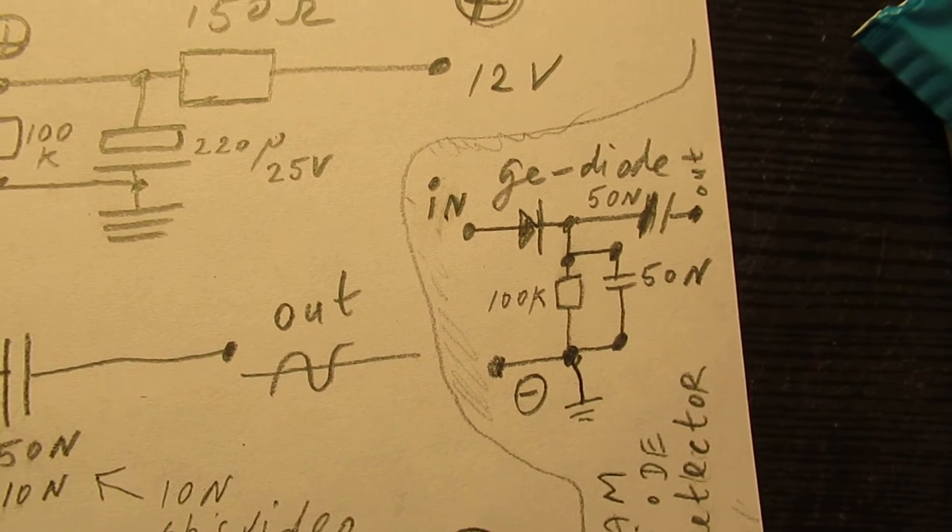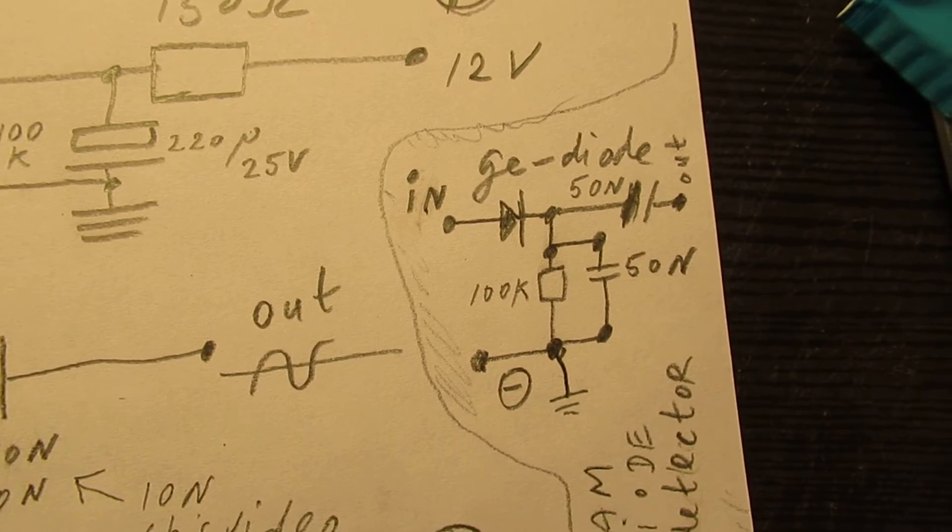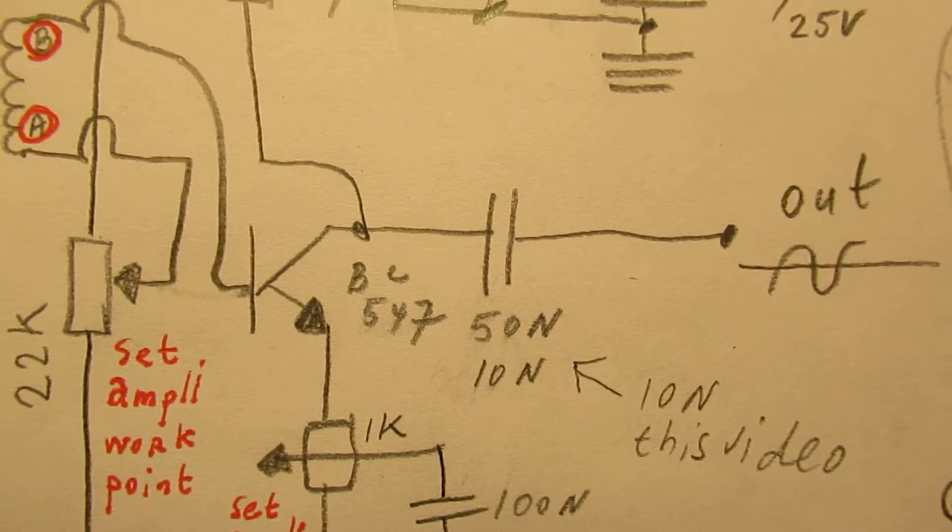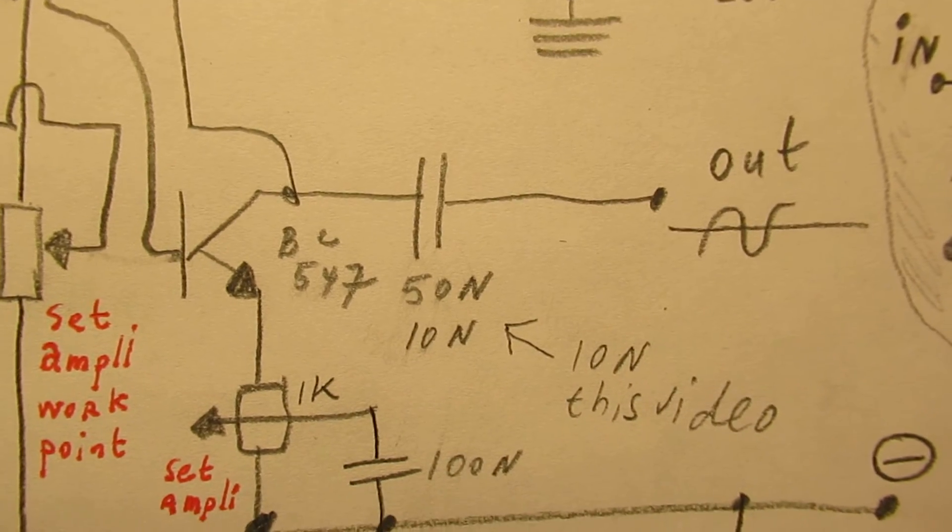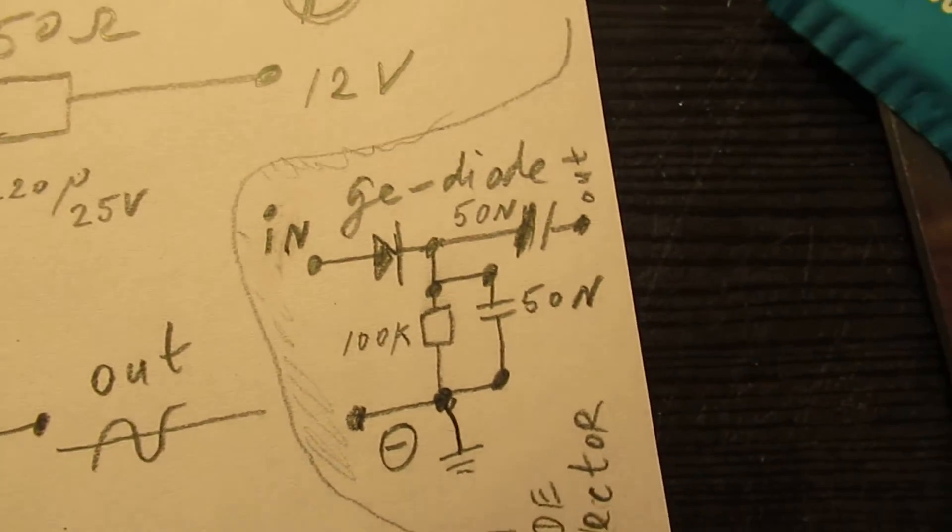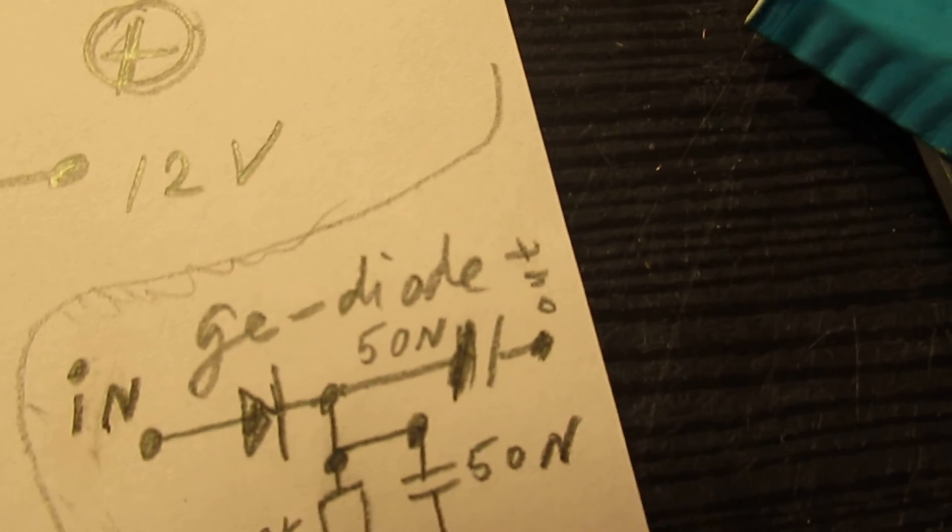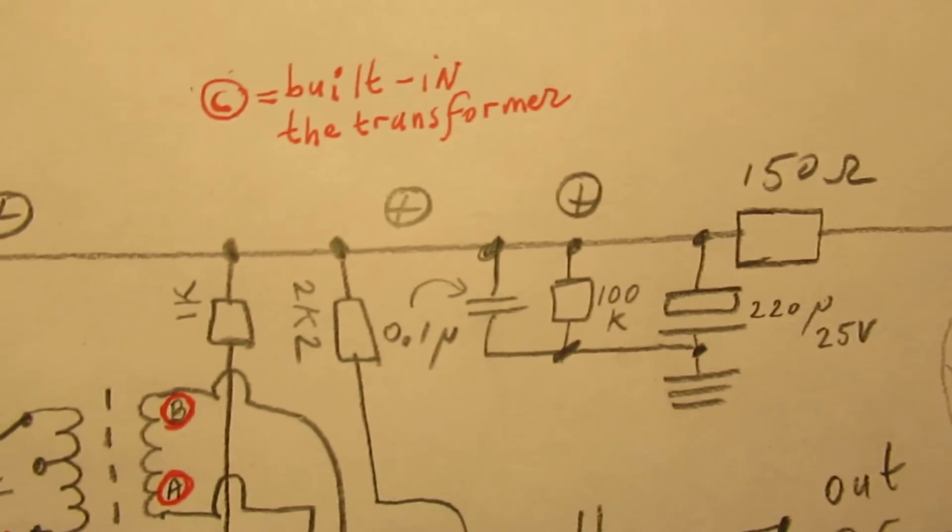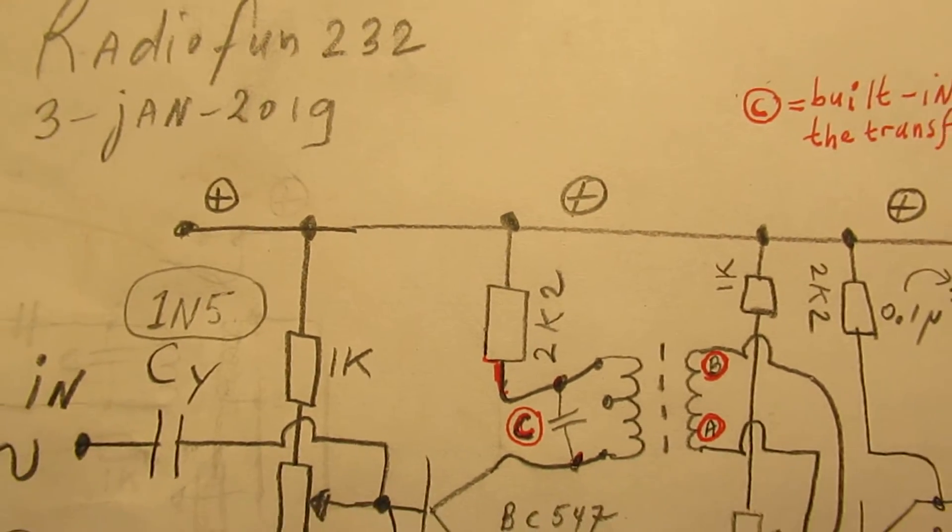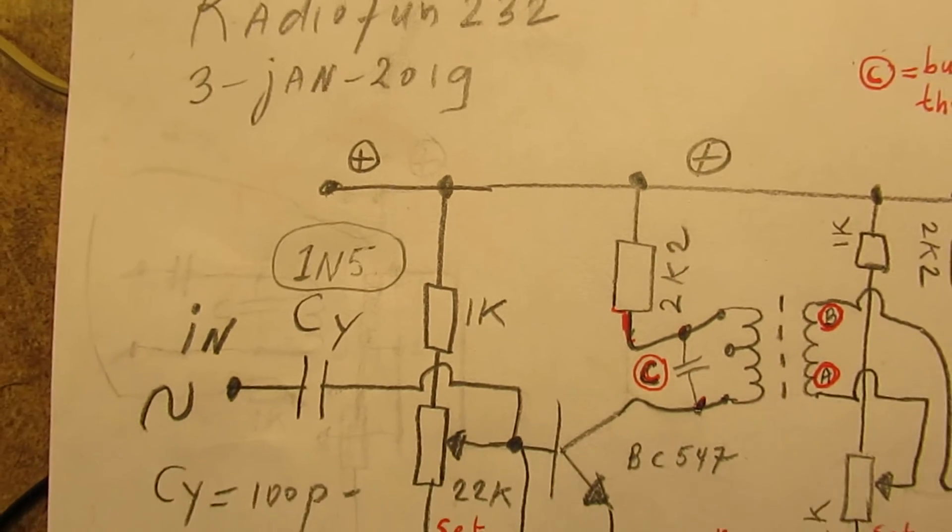Amplitude modulated radio signals detector - connect that to here, to this location, the 50 nanofarad capacitor. And at the output here you can take out the audio frequency signals.